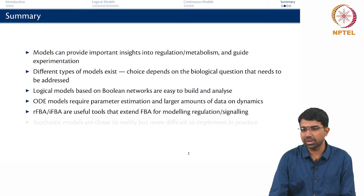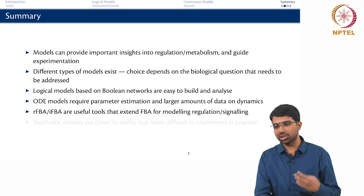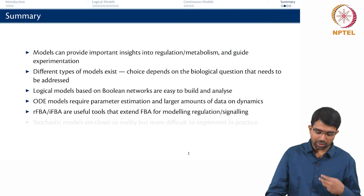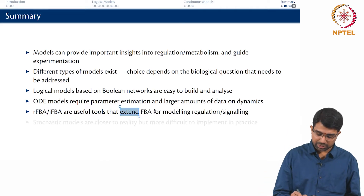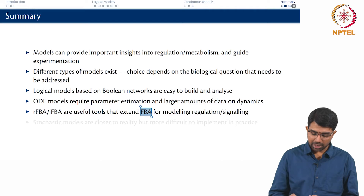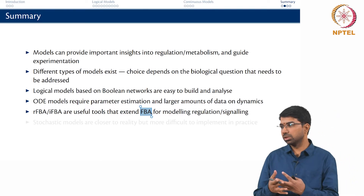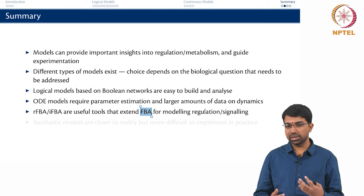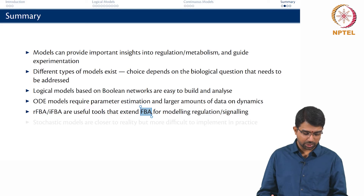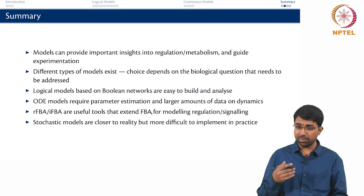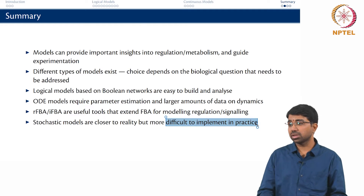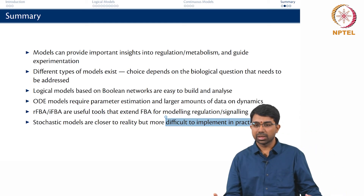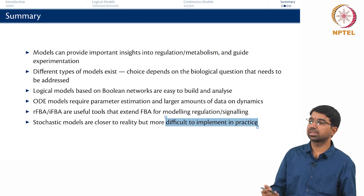Tools like RFBA or integrated FBA are ways to integrate genomic data into models. They are useful because they extend FBA for modeling regulation and even signaling — essentially marrying FBA with a discrete modeling framework, connecting Boolean rules for various regulators, which is what RFBA is. Stochastic models are very powerful to make realistic modeling and simulation but very difficult to implement in practice, and you can make only small-size inferences. There are nice stochastic models of chemotaxis, but you seldom have stochastic models of an entire cell.